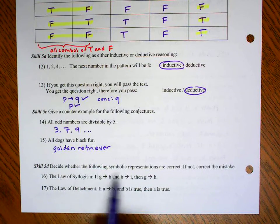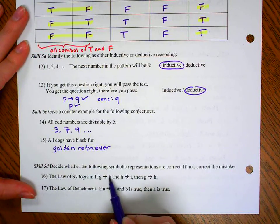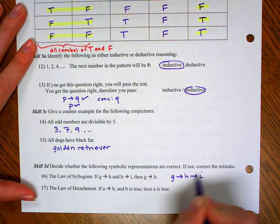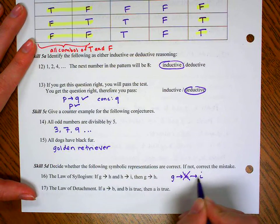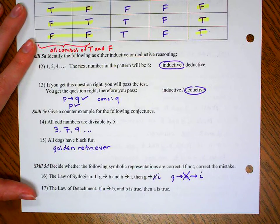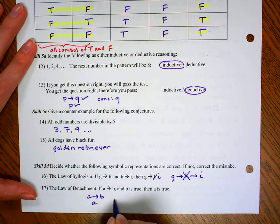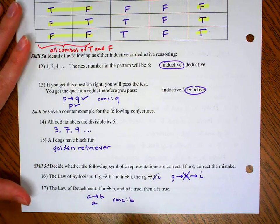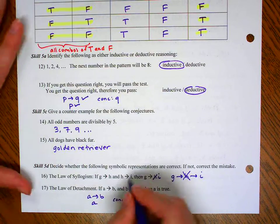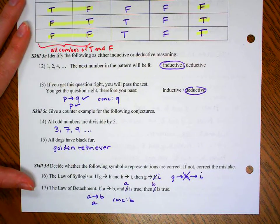5D. Decide whether the following symbolic representations are correct. If not, correct the mistake. The law of syllogism here says G goes to H and H goes to I. So we make our train. Our conclusion is supposed to be the first thing and the last thing. Well, they said G goes to H. That's not correct, so we're going to change that to I. The law of detachment says if we have a conditional statement and the first thing happens, our conclusion is that the second thing will happen. Well, this says if A goes to B and B is true, then A is true. That's not true. We needed to see that if A is true, then B is true.